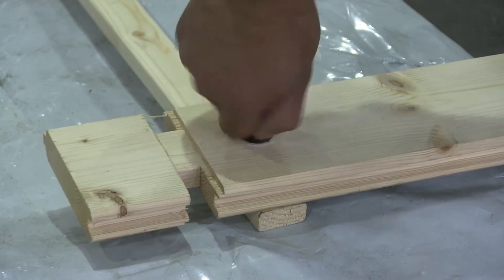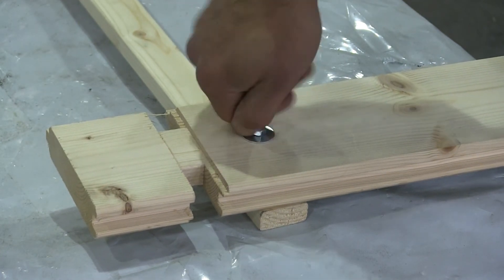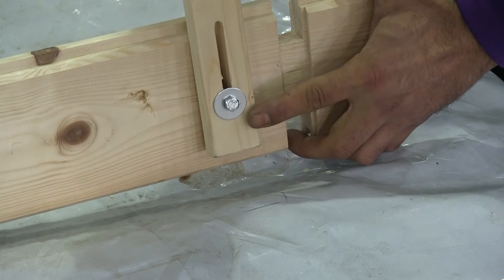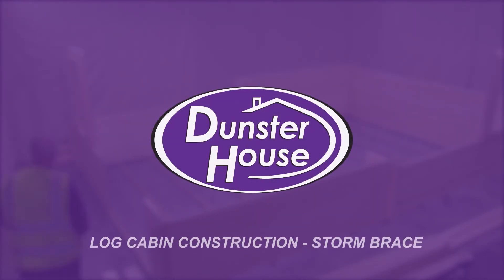Once the cabin has had time to become accustomed to its new location, you should adjust the braces by loosening and re-tightening the bottom bolt. Again, making sure that it is only finger tight.